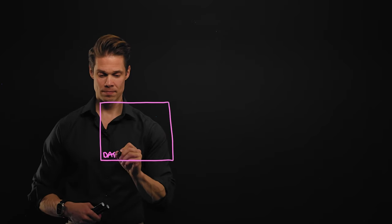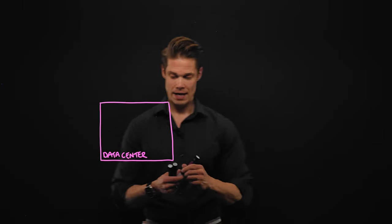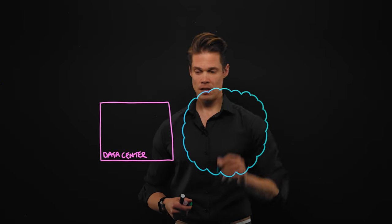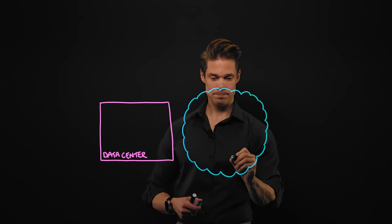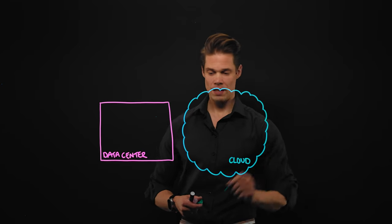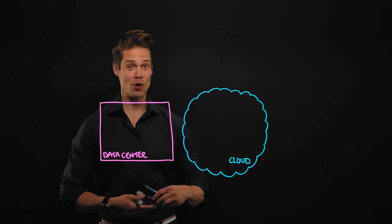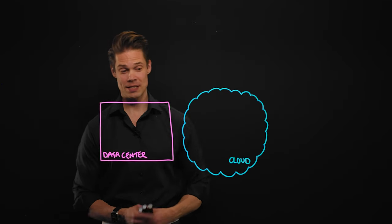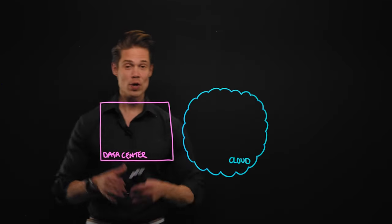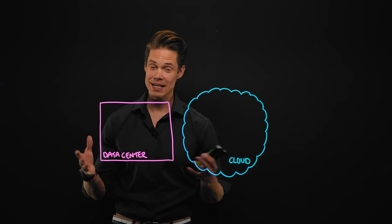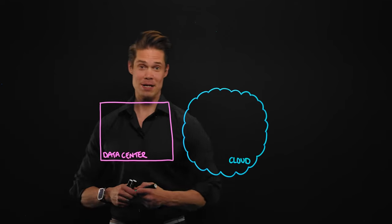The first main topic is data centers, and the second one is cloud. Data centers and clouds — those are the two main topics we are going to talk about. Let's start with the data center. What do we have in a data center? What makes a data center tick? What components do we need and how do we configure them?